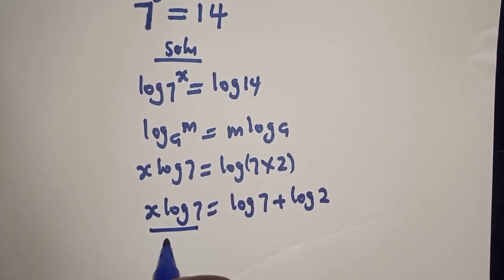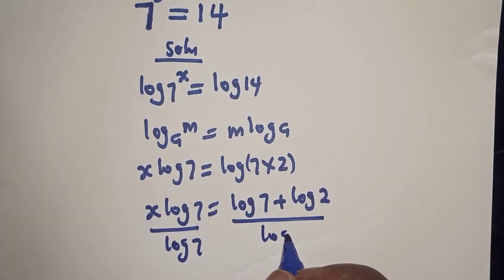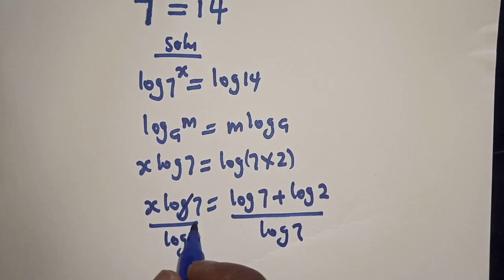Now, let's divide both sides by log 7. This one will cancel this.